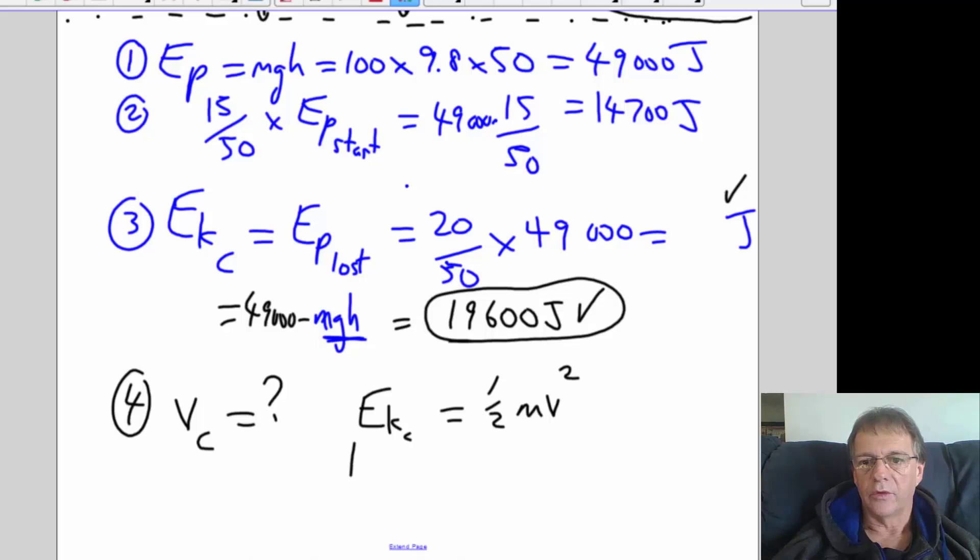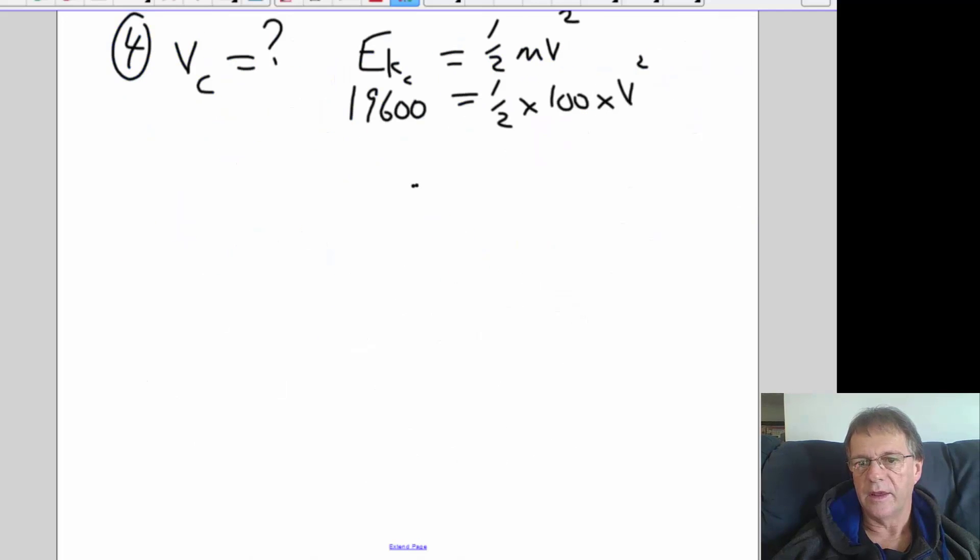This is all assuming that we're ignoring friction at the moment and drag. So if you put that value in there and put in the mass of the skier which was 100, then you end up with v². You've just got to do half of 100, which is 50, and if you divide by 50 then you should be able to find v.